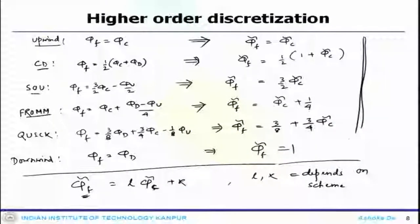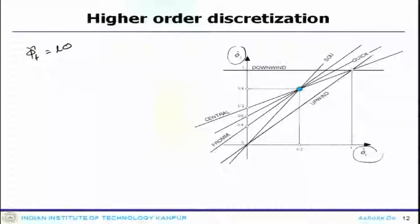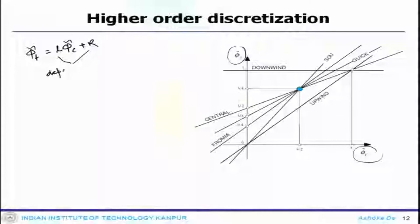If we plot all these, this is how it looks. This is our phi_f_tilde and this is our phi. Our phi_f_tilde is phi_c_tilde plus K, where L and K are dependent on various schemes.